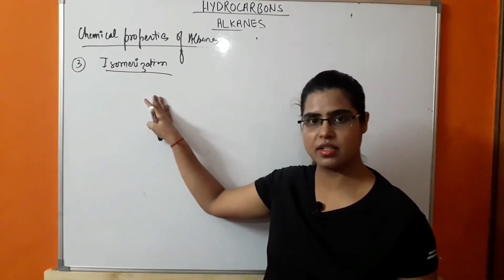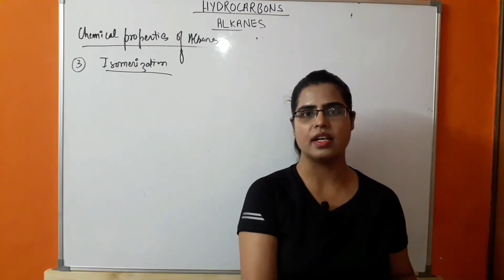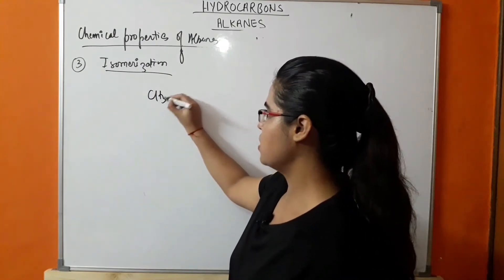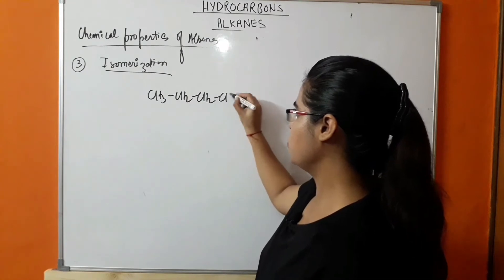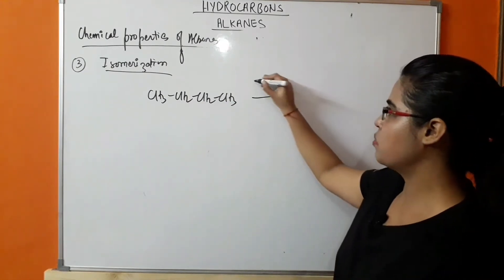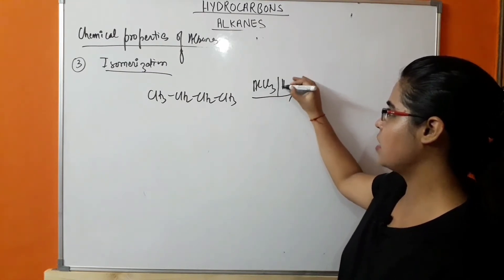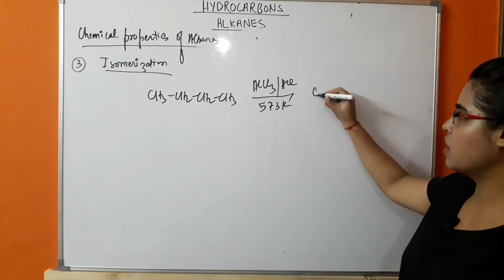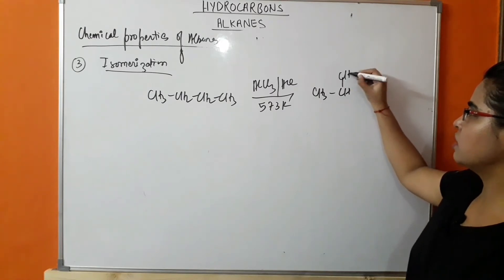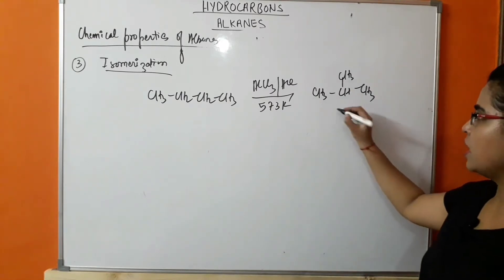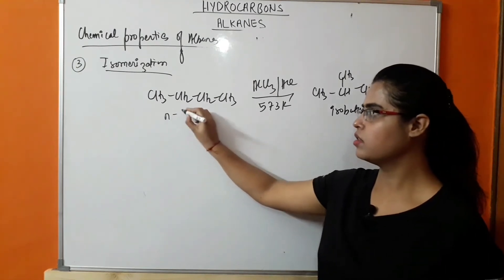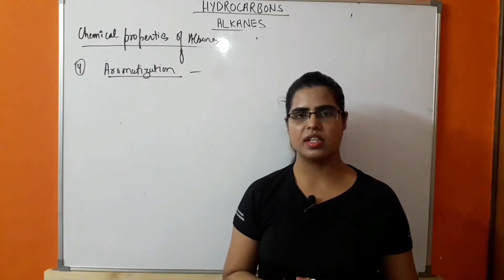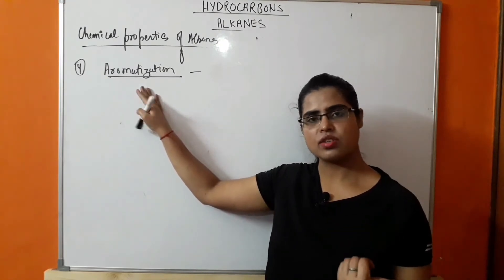The next chemical property represented by alkane is isomerization. In isomerization, one isomer is converted to another isomer in the presence of a catalyst. For example, n-butane (CH3CH2CH2CH3) in the presence of AlCl3 as catalyst, with medium SCl at 573 K temperature, is converted into isobutane — its isomer. This is the example of isomerization.